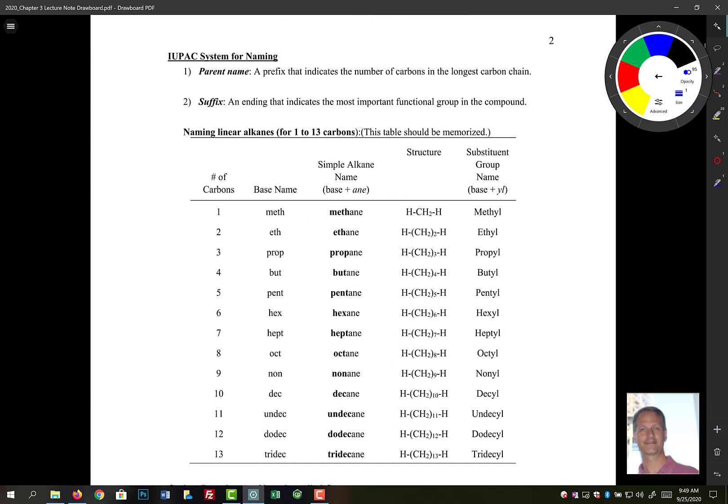In the IUPAC system for naming, there's two parts. The first part is your parent name. It's a prefix that indicates the number of carbons in the longest carbon chain. Before in that last example, we said pent, pent was for five.